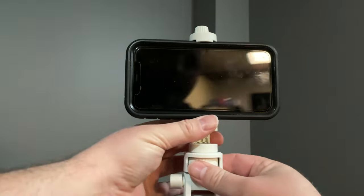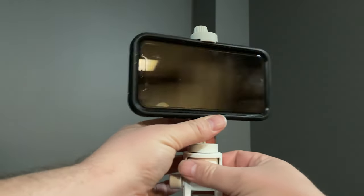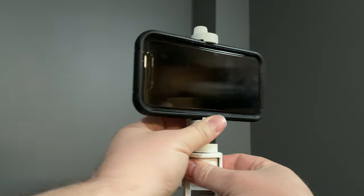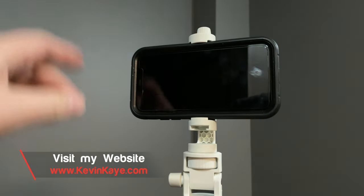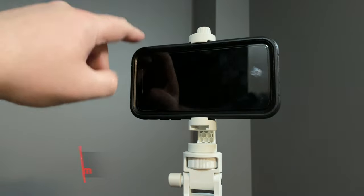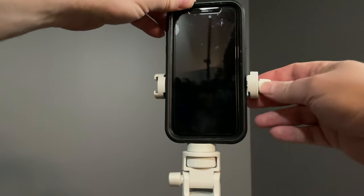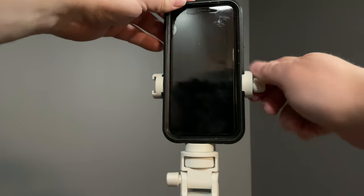Just like we did with the GoPro, we can loosen the dial here and move the camera around. Once we tighten it, we get to a point that a simple touch isn't going to move it. And it's just as easy if we wanted to put the camera in portrait mode instead.